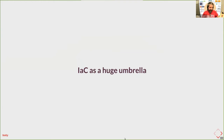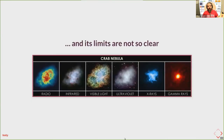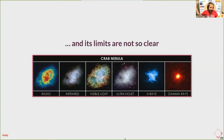Another similarity is that infrastructure as code today is a quite massive thing. There are lots of tools — tools that were not infrastructure as code but now cover some use cases. The limits of infrastructure as code today are not so clear. With this parallelism, the Crab Nebula in visible light may look well-defined, but if you consider the rest of the spectrum, or that it's constantly expanding, the limits are not so clear either.